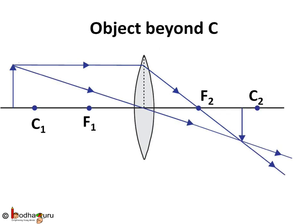Now let us place the object beyond point C1, but not as far as the previous case. In this case, draw a line from the top of the object parallel to principal axis and it will deviate and pass through the focus. Draw another line...